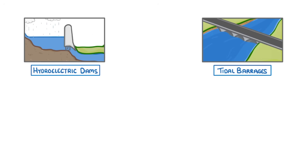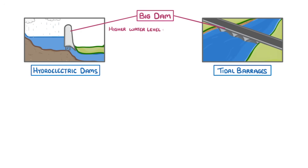The first thing to know is that both of these systems work in basically the same way. There's a big dam that prevents water from flowing like it should, and so we get a much higher water level on one side than the other. The only difference between the two is what causes the difference in water levels.